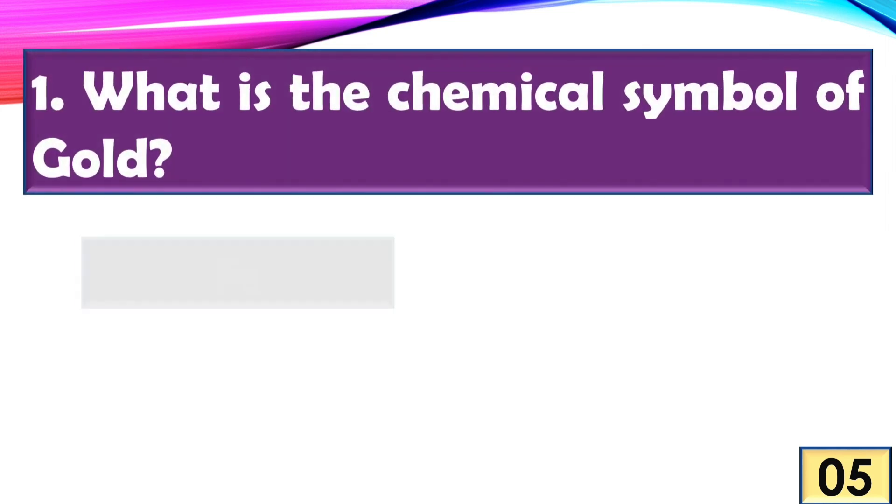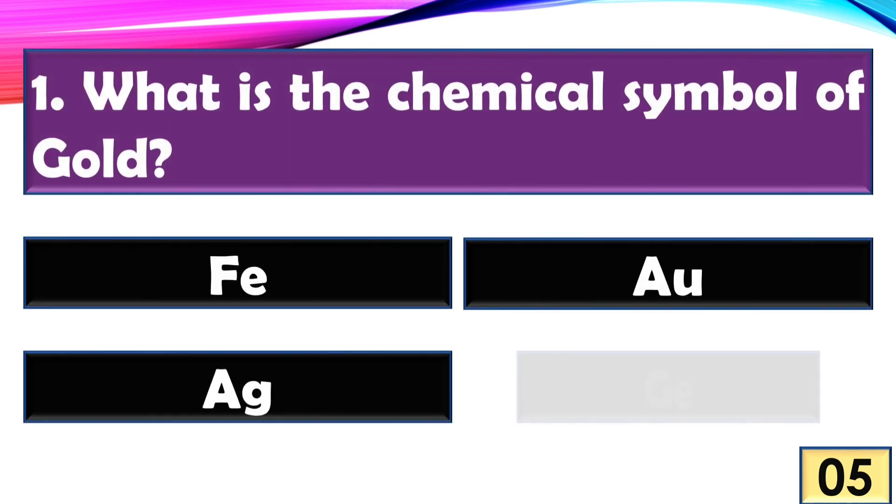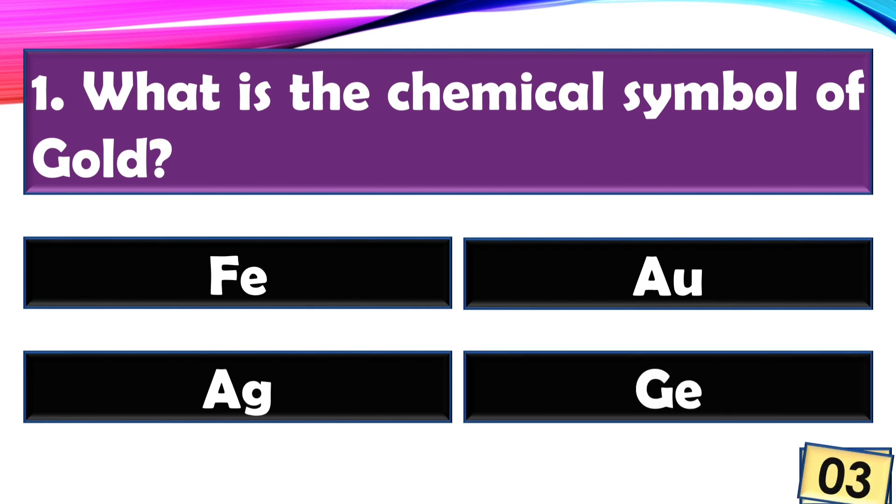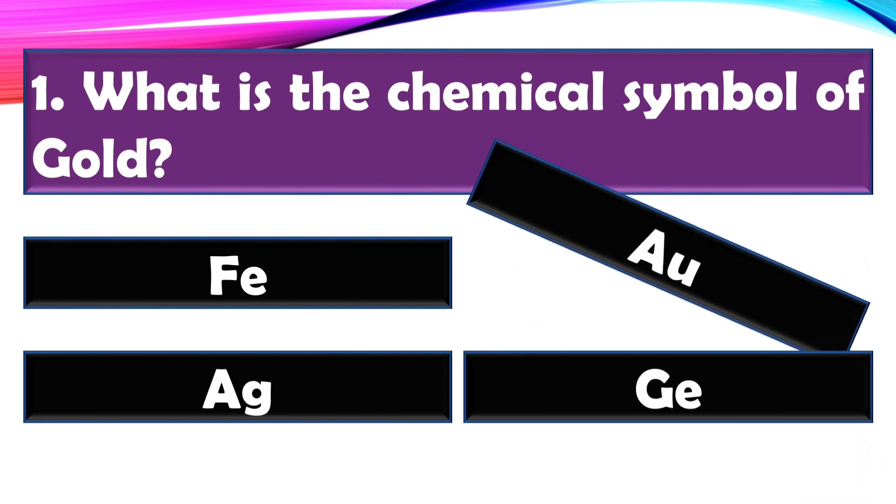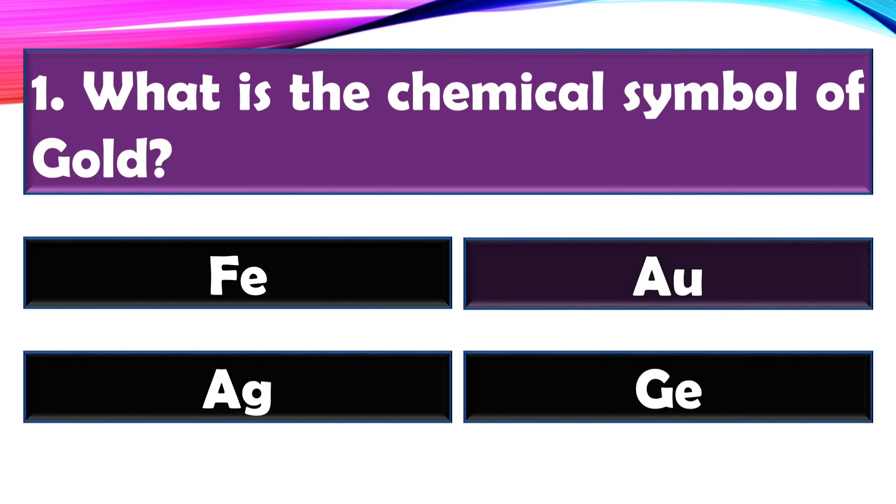What is the chemical symbol of gold? The chemical symbol of gold is Au.